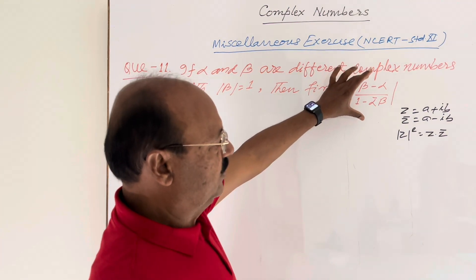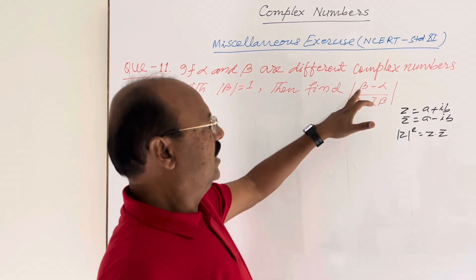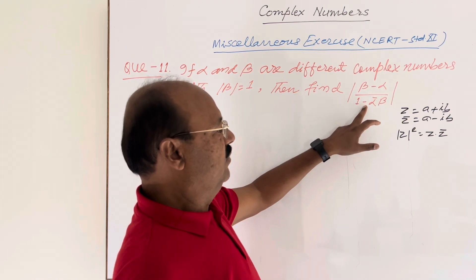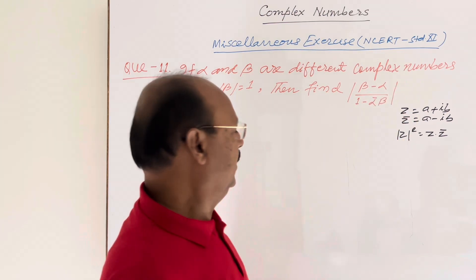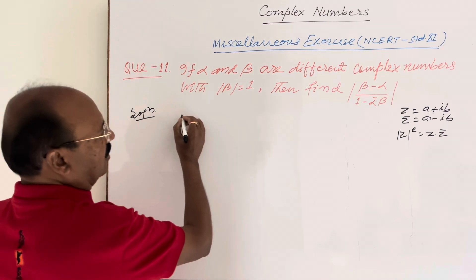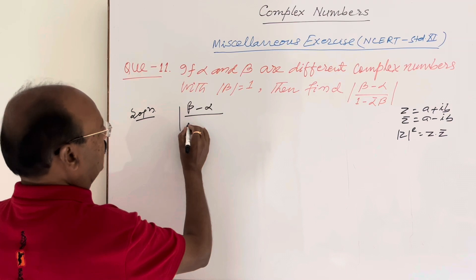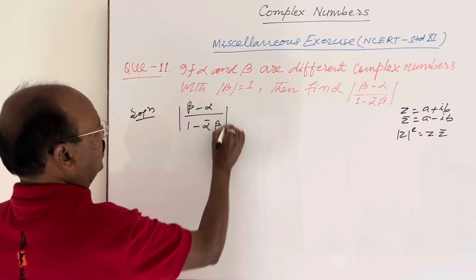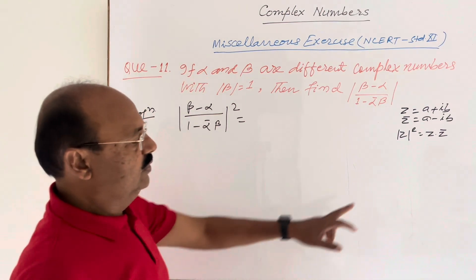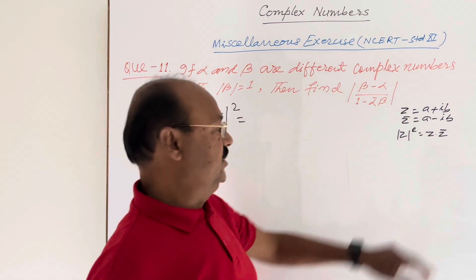We have to find the value of the given expression, and we will use a very small trick here. We will start with the modulus of beta minus alpha upon 1 minus alpha-bar into beta, whole squared. This is the trick — you have to remember it. Now we will use the formula: modulus of Z squared is equal to Z into Z-bar.